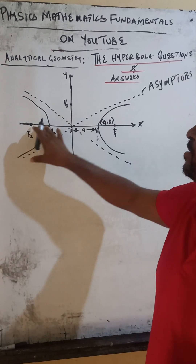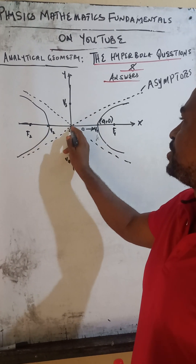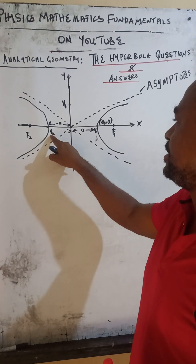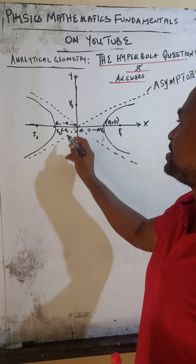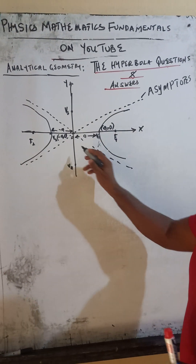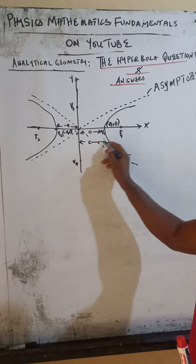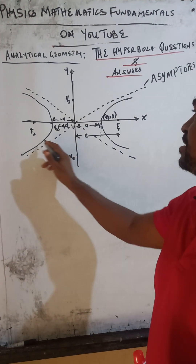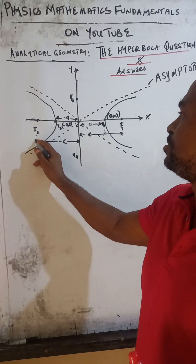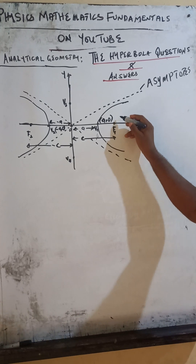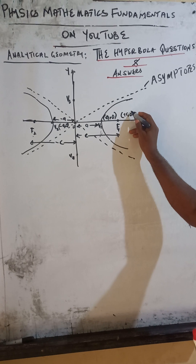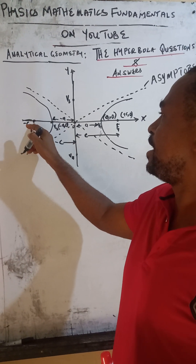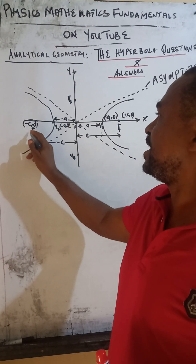The coordinate of vertex V1 is A on the X-axis and 0 on the Y-axis. The distance between vertex V2 to the origin will be negative A. So the coordinate of V2 will be minus A on the X-axis and 0 on the Y-axis. The distance from the origin to the focal point is distance C, which is positive on the positive side of the X-axis. The coordinate of focal point F1 is plus C, 0, and focal point F2 is minus C, 0.